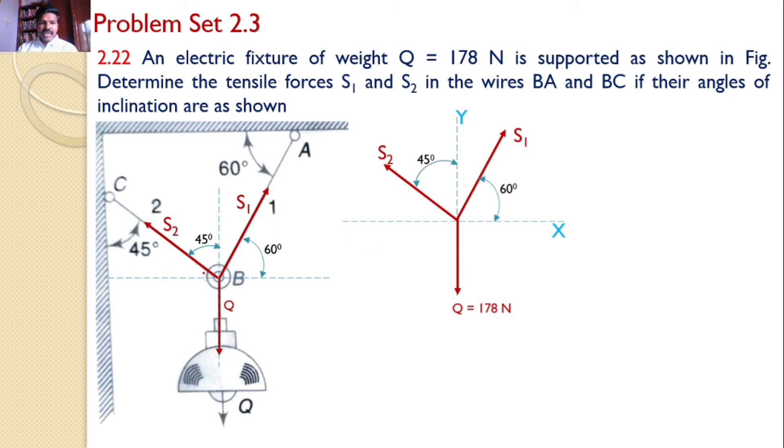Similarly, given that the string BC makes an angle 45 degrees with the vertical, that means this S2 makes an angle 45 degrees with the vertical. Because it is the same string, it makes the same angle with the vertical.